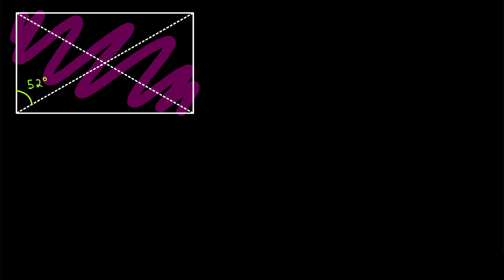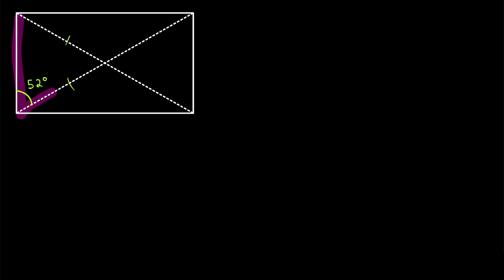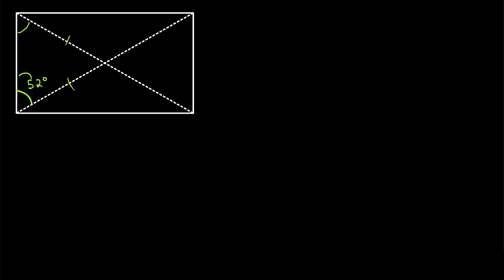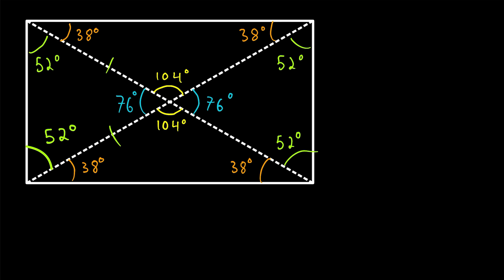Here is the last problem. In the interest of time, I won't walk through this step by step — it's very similar to the one we just did, so give it a try yourself. To get you started: we already know this angle is 52 degrees, and the diagonals of a rectangle bisect each other, so this is an isosceles triangle just like before. The matching base angles share the same measure, and since the two triangles are congruent, we know the corresponding angles match too. I'll fill in the answers in 3, 2, 1. Let me know how it went in the comments, and I hope this video was helpful.